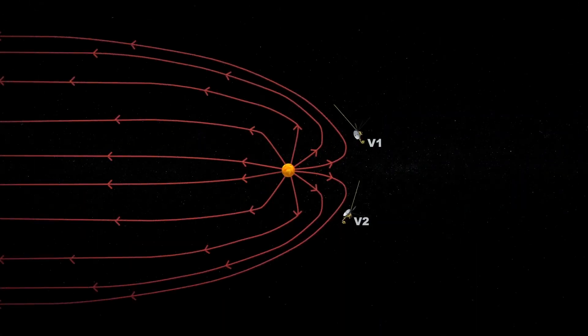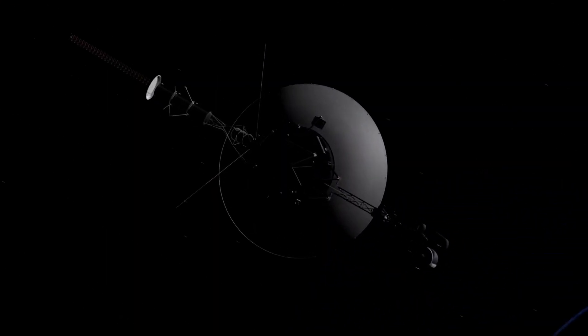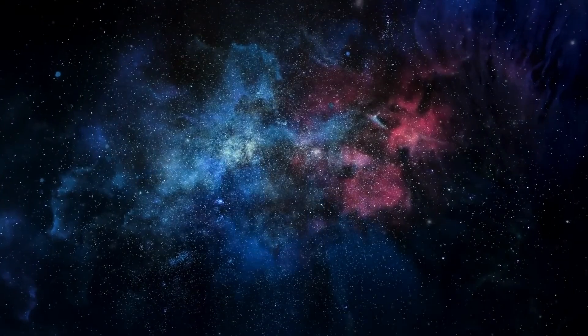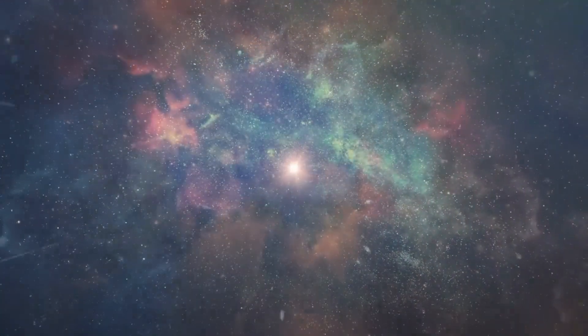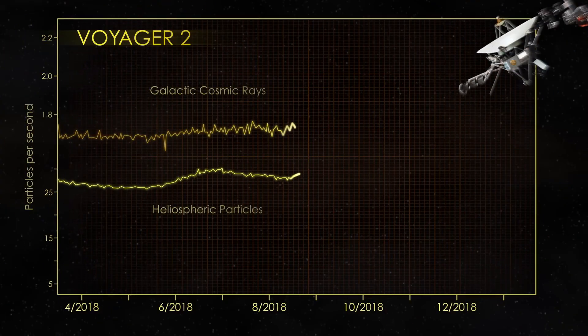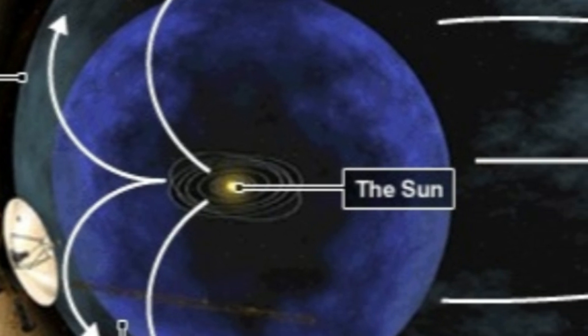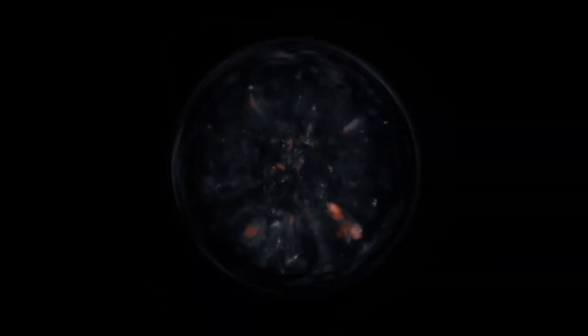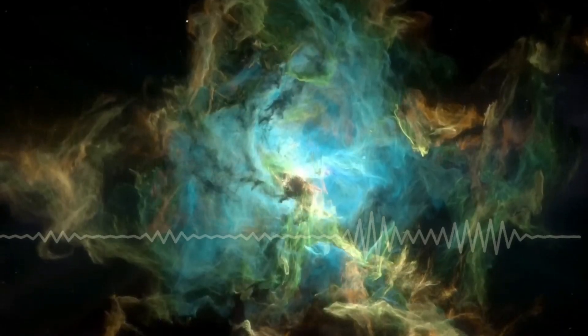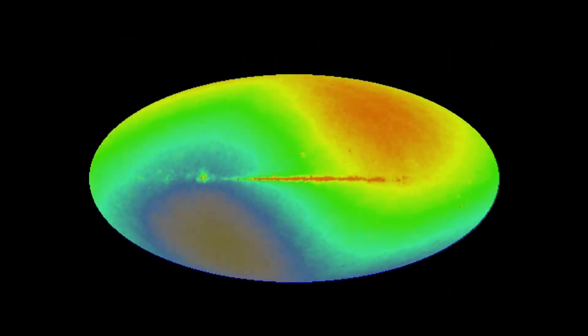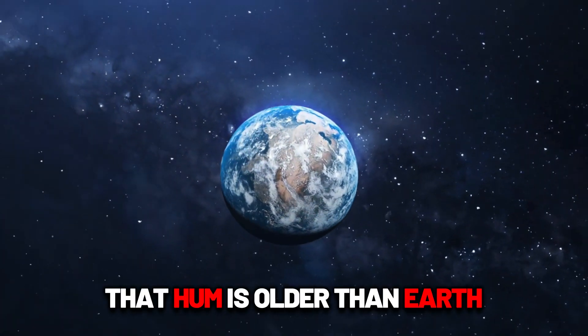But the strangest discovery wasn't visual. It wasn't magnetic. It wasn't even expected. Voyager detected something else. A hum. A cosmic vibration, steady and persistent, emanating from the plasma waves in interstellar space. Like the faint ringing of a wine glass after it's been struck, Voyager began to pick up this low-frequency resonance just beyond the heliopause. It wasn't noise. It was a song, a whisper of the universe's ancient rhythm. This plasma oscillation might be the sound of space itself, a natural background tone of the interstellar medium. And it's still humming, even now. That hum is older than Earth.